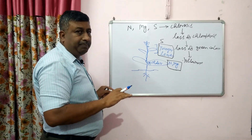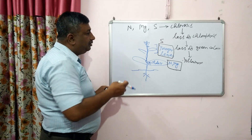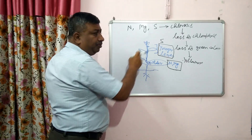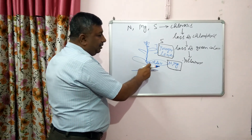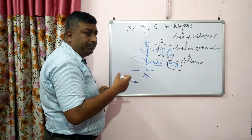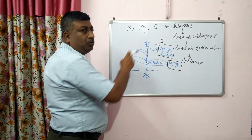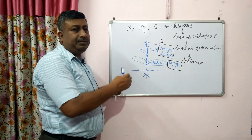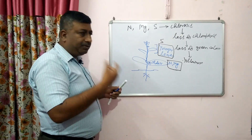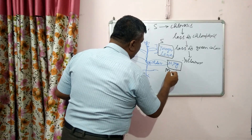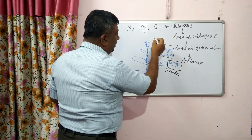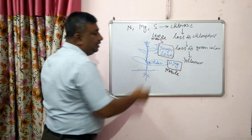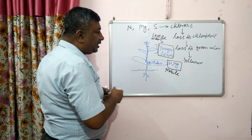But sulfur is not mobile — it is less mobile in the plant. So whenever there is a requirement of sulfur in newly developed leaves, the older leaves cannot supply it because sulfur is immobile and not translocated to younger leaves. That is why younger leaves show deficiency symptoms of sulfur. So on older leaves, deficiency occurs for those nutrients which are mobile in the plant, and on younger leaves for those which are less mobile — and sulfur is less mobile, so deficiency occurs on younger leaves.